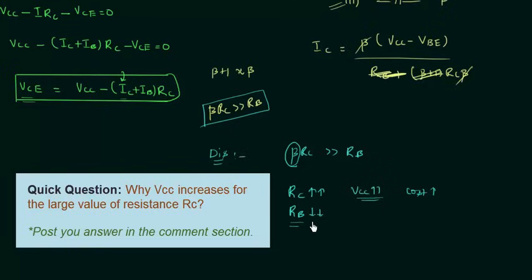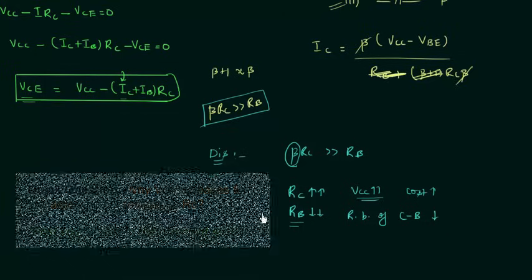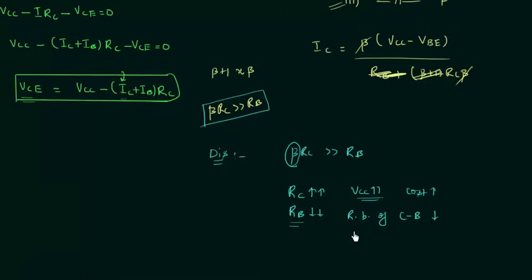If we make Rb very low, then the reverse bias of the collector-base junction will reduce. This is the disadvantage of collector feedback biasing. I hope this is clear to you — this is all you should know about collector feedback biasing. I will end this lecture here. See you in the next one.